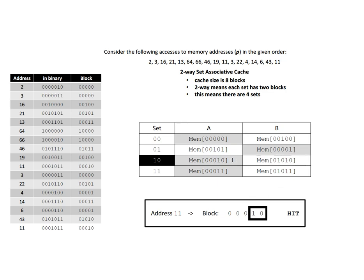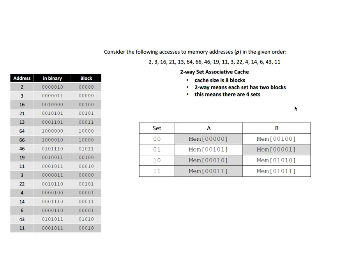Note that with direct-map caching, when we accessed the block containing address 43, it evicted the block containing address 11 just before we needed it. With this two-way set associative cache, we avoided that problem. There are no guarantees, but the N-way set associative cache will often keep blocks in the cache that we use later — blocks that would have been evicted under direct-map caching. This is the final state of our cache.